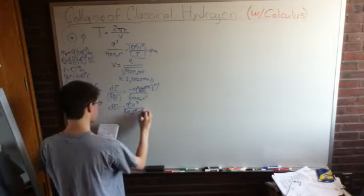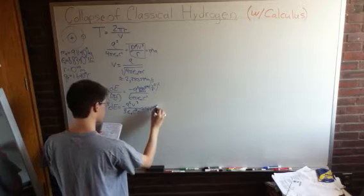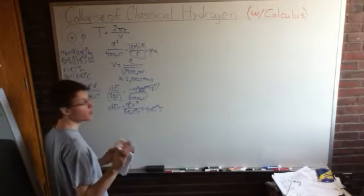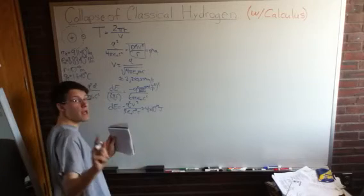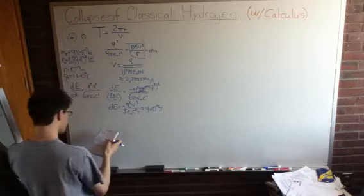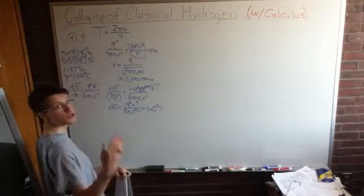And this has an approximate value of 4 times 10 to the negative 24 joules. This is a tiny amount of energy lost. So, maybe atoms actually will last a long time. But let's keep going and find out. So, we have how much energy lost per orbit, so now let's try to find how much energy it has total.